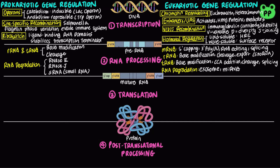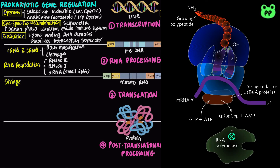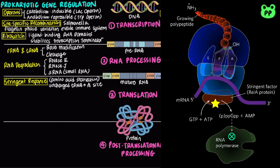Prokaryotic regulation of translation includes the stringent response, which is triggered when amino acid concentrations are low. This causes the binding of uncharged tRNAs to the ribosomal A-site, which in turn triggers the binding of an enzyme called stringent factor, also known as the RelA protein, to the ribosome. When bound to the ribosome, stringent factor catalyzes formation of the unusual nucleotide guanosine tetraphosphate, abbreviated as ppGpp. The abrupt rise of ppGpp results in a great reduction in ribosomal RNA synthesis, decreasing the number of ribosomes synthesized, which in turn decreases translation.